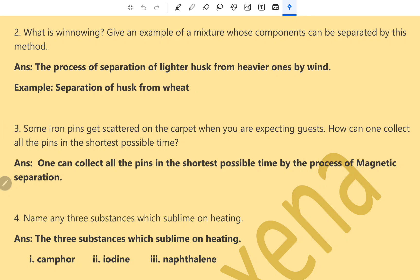Question number 3. Some iron pins get scattered on the carpet when you are expecting guests. How can one collect all the pins in the shortest possible time? One can collect all the pins in the shortest possible time by the process of magnetic separation.